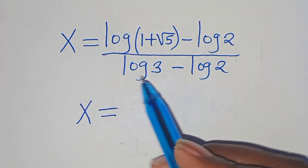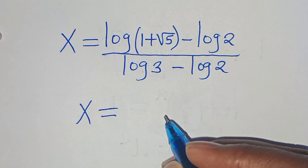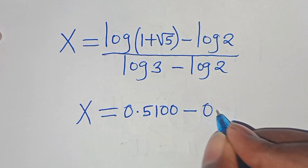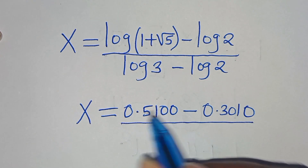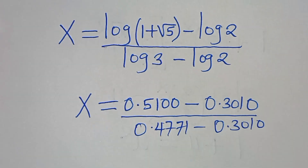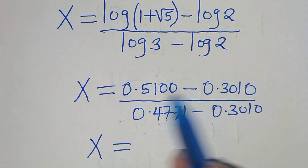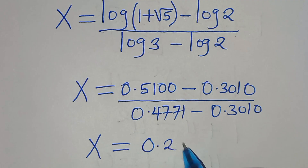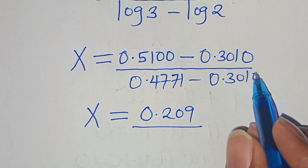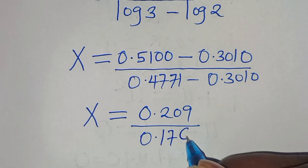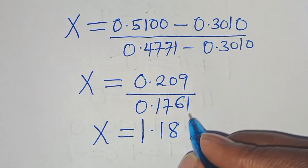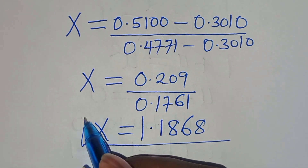This means x equals: log(1 plus square root of 5) which is approximately 0.5100, minus log 2 which is 0.3010, divided by log 3 which is 0.4771, minus 0.3010. The numerator gives 0.209 and the denominator gives 0.1761, so x equals approximately 1.1868.